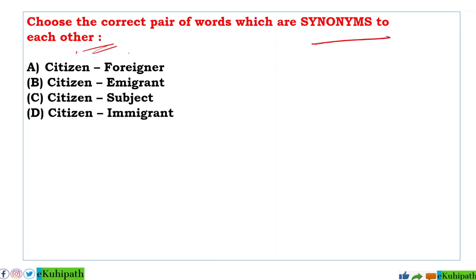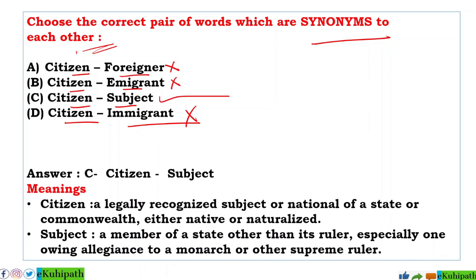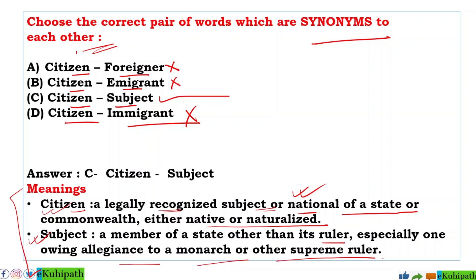Next synonym pair: A: citizen/foreigner, B: citizen/immigrant, C: citizen/subject, D: citizen/immigrant. The correct answer is C — citizen and subject. Citizen means a legally recognized national of a state, either native or naturalized. Subject means a member of a state other than its ruler, one owing allegiance to a monarch or supreme authority. So citizen and subject are synonyms.